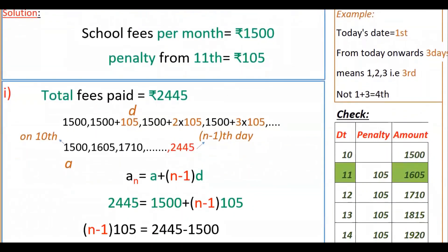We have to find the date on which she paid the fees. The total fees paid in February is 2445 rupees. Starting from 1500 rupees, you add 105 rupees penalty each day: 1500, then 1500 plus 105, then 1500 plus 2 into 105, and so on for the first day, second day, third day.